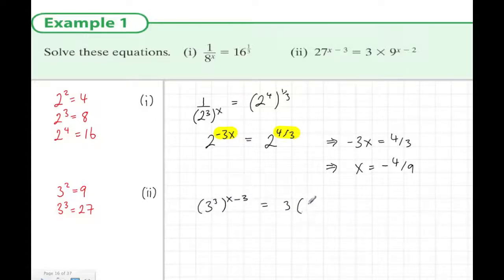And instead of 9, we'd write 3 to the power of 2, and that's to the power of x minus 2. Now we multiply out the powers on the left-hand side, we get 3 to the power of 3x minus 9. Now 3 times 3 to the power of 3, that's 3 to the power of 4. We add the 1 plus 3, and this is all to the power of x minus 2.